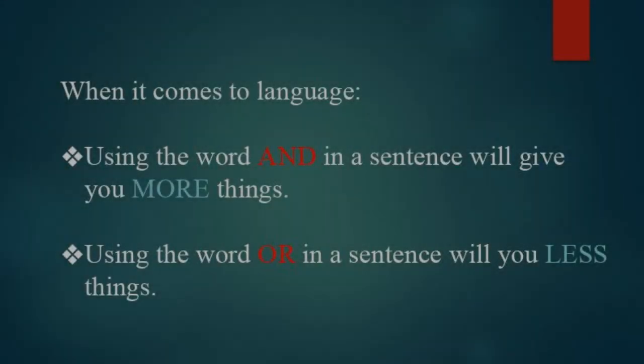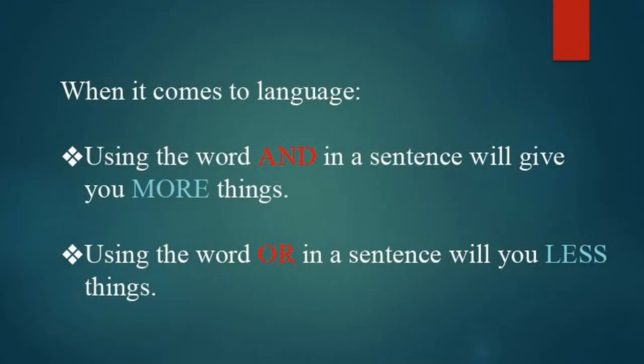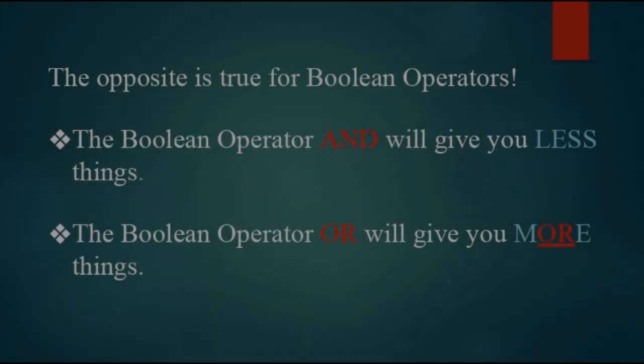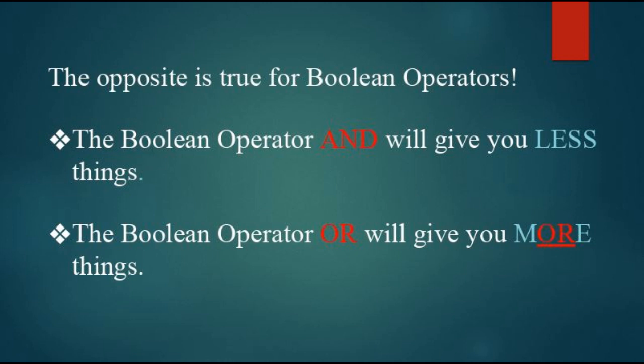First, it is important to understand how Boolean operators work. Usually, when we use the word AND in a sentence, we get more things. When we use the word OR in a sentence, we get less things. However, when using the Boolean AND in a database search, we will get less results, while using the Boolean OR will give us more results.